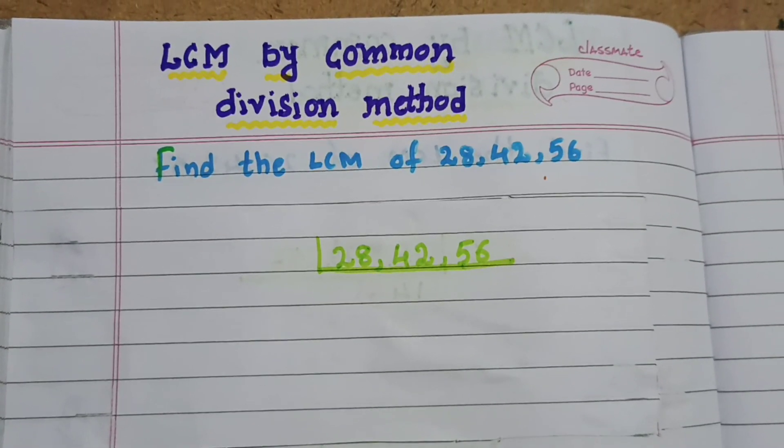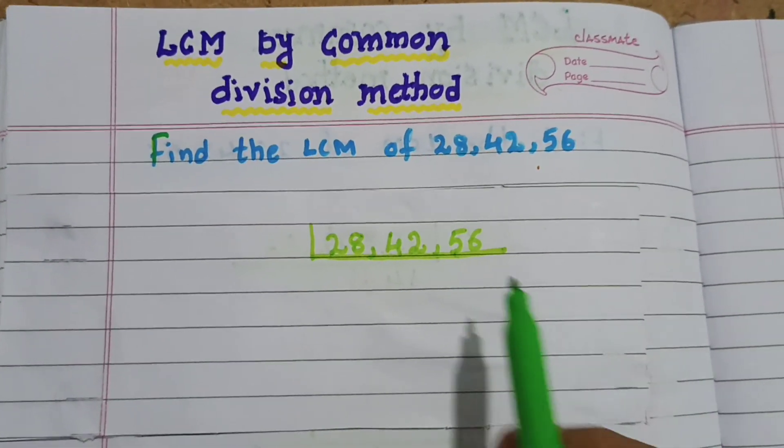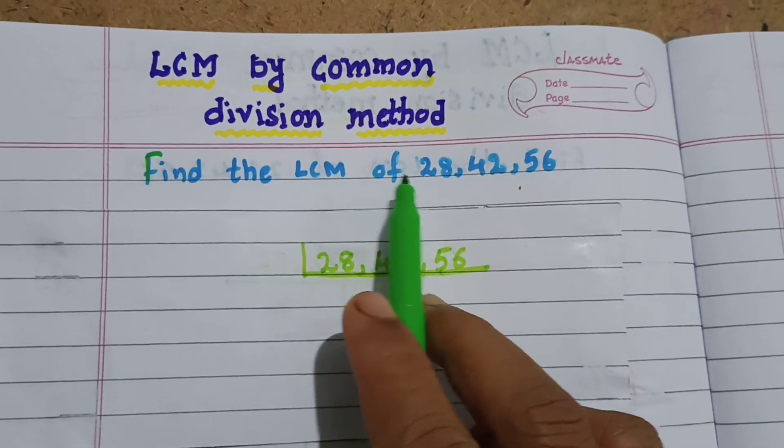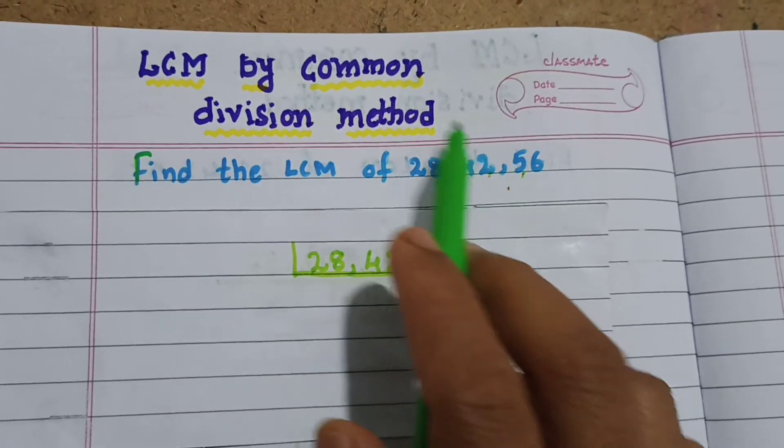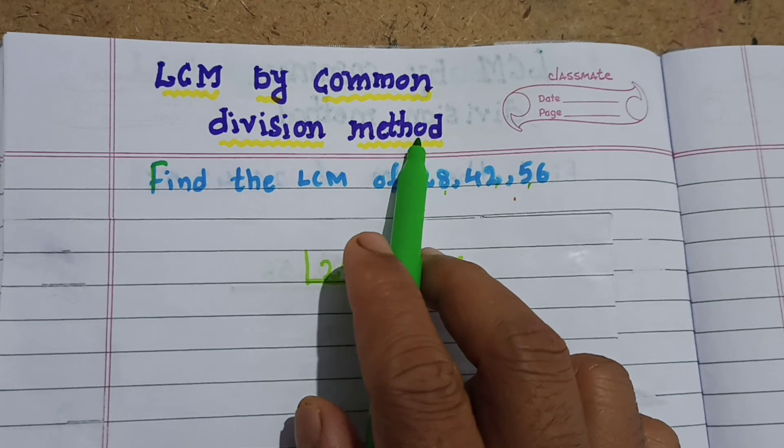Hello everyone, welcome back to Tricky Math. Today in this session, I am going to find the LCM of 28, 42, 56 by using common division method.